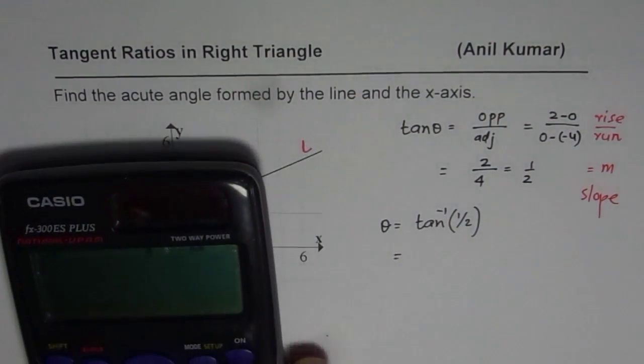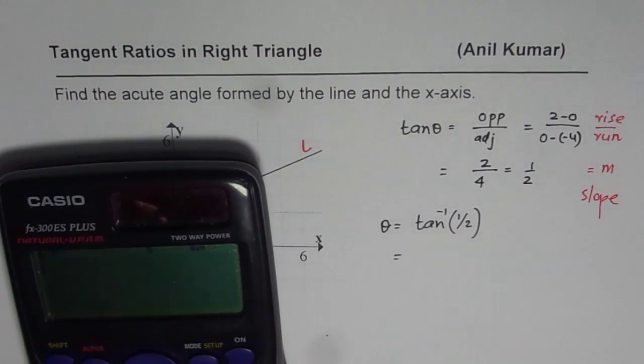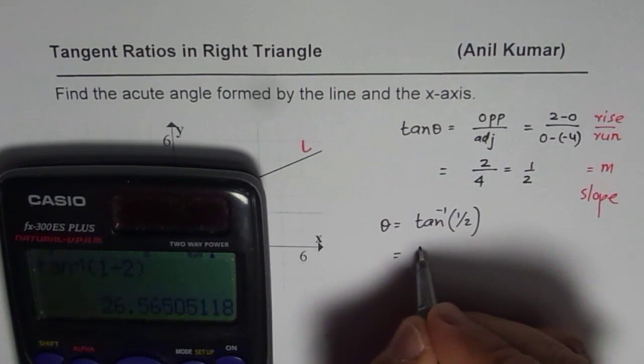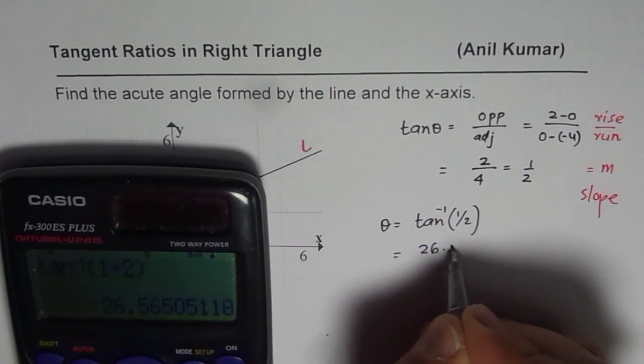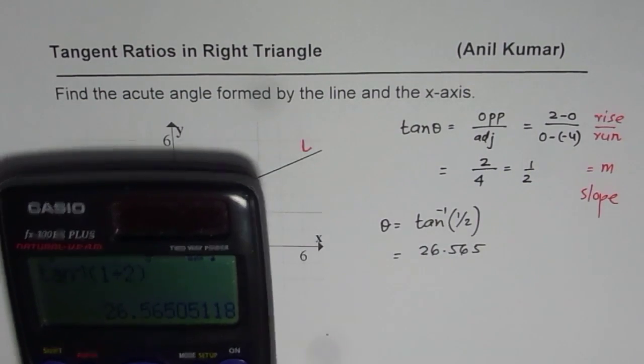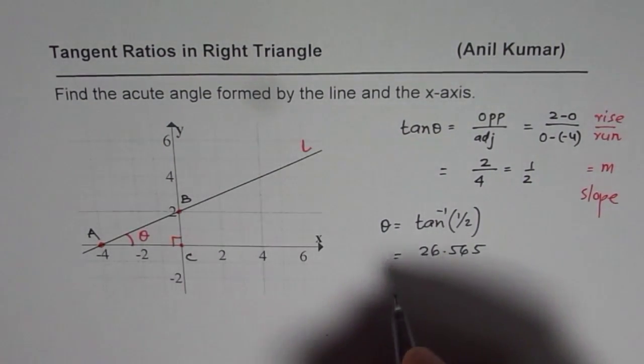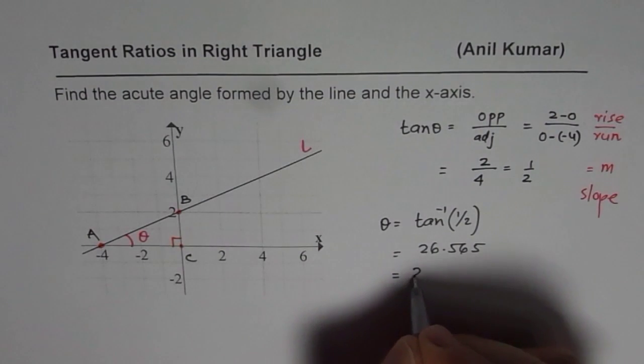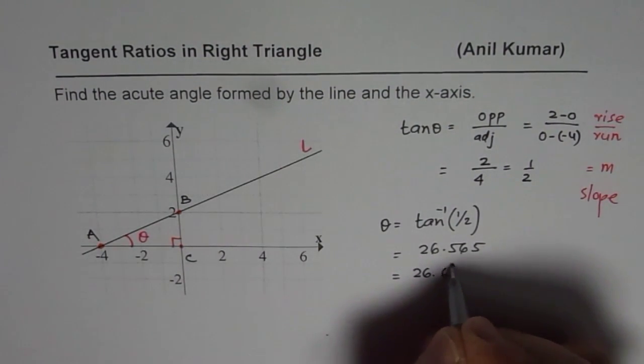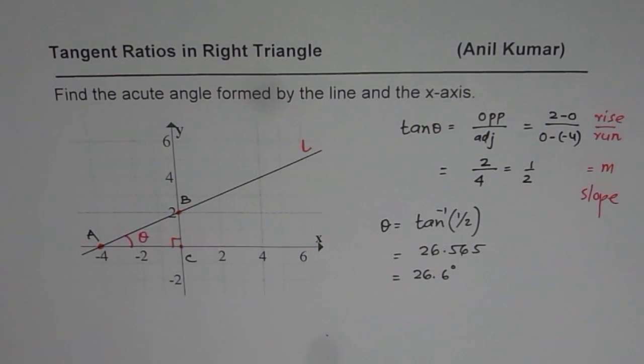So, tan inverse of half, second function, tan inverse within bracket. We have 1 divided by 2, bracket close, equals to. So, we get an angle of 26.565. Let us round it to 1 decimal place. So, we get angle theta as 26.6 degrees. That is how you can find the angle which the line makes.